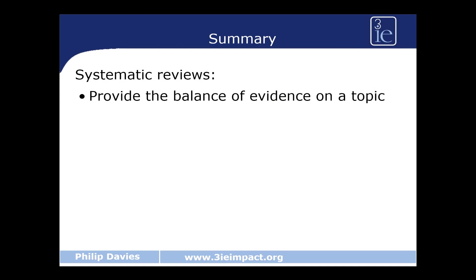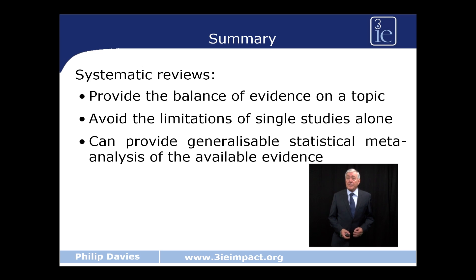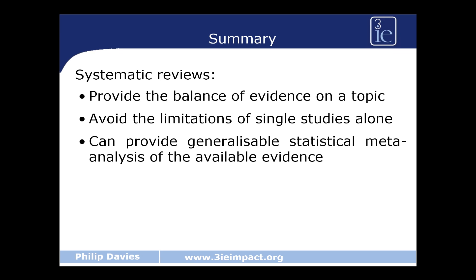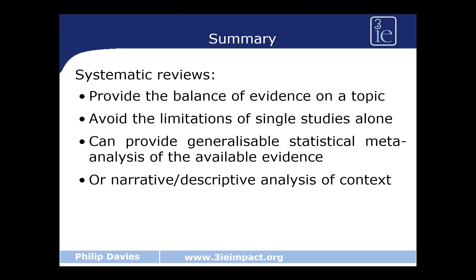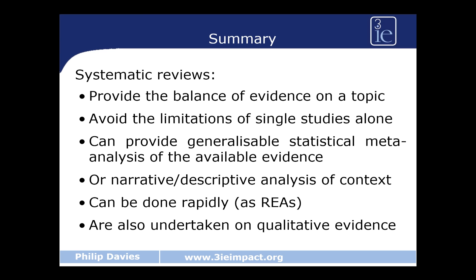In summary, systematic reviews provide a balance of the evidence on a topic or policy issue. They avoid the limitations of single studies alone. They can provide generalisable statistical meta-analysis of the available evidence, allowing us to make quite confident predictions about an overall population. We can offer more narrative, descriptive reviews, particularly focusing on context and contextual specificity. They can be done rapidly in a rapid evidence assessment, which is particularly attractive if you're trying to get evidence in a shorter period of time — anything up to three months. And finally, we also undertake qualitative evidence synthesis, focusing on context and different stakeholders' views. Thank you for listening to this lecture. We hope you've learned a little bit about systematic reviews and that you'll use them in the future to make better decisions about policy and practice.